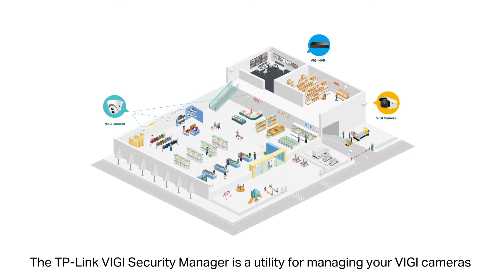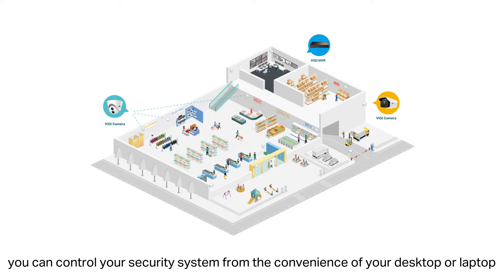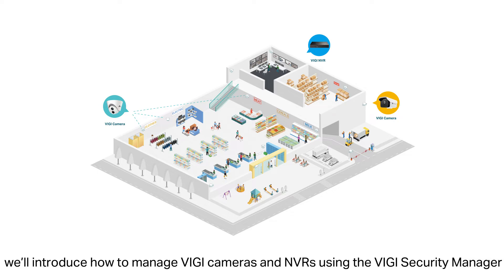The TP-Link Vigi Security Manager is a utility for managing your Vigi cameras and NVR centrally. With this utility you can control your security system from the convenience of your desktop or laptop and have quick access to your video feeds. Today we'll introduce how to manage Vigi cameras and NVRs using the Vigi Security Manager.